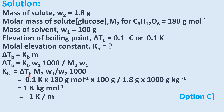Substituting the values: Kb = (0.1 K × 180 g/mol × 100 g) / (1.8 g × 1000 g/kg) = 1 Kelvin·kg per mole. Since kg/mol is the inverse of the unit of molality, this equals 1 Kelvin per molality. Therefore option C is correct.